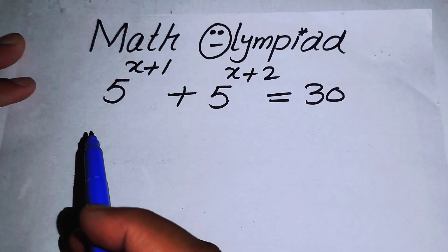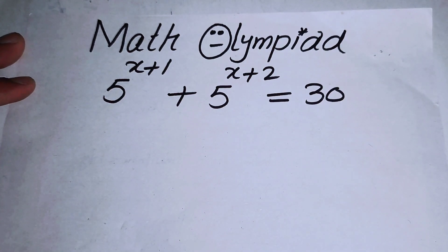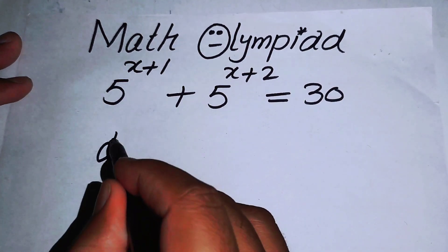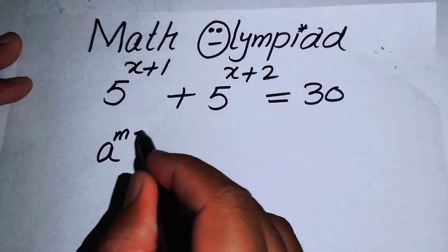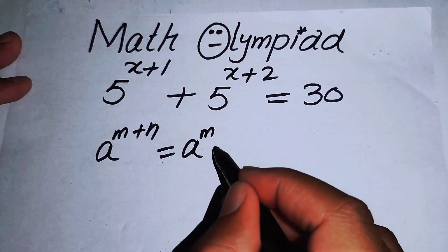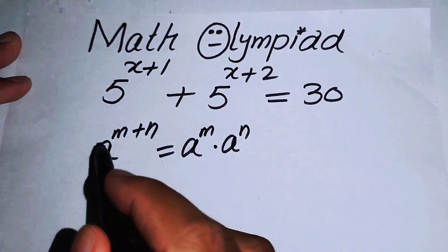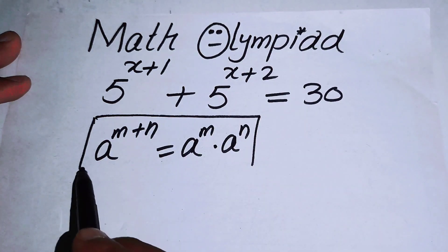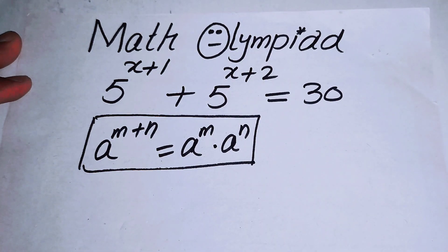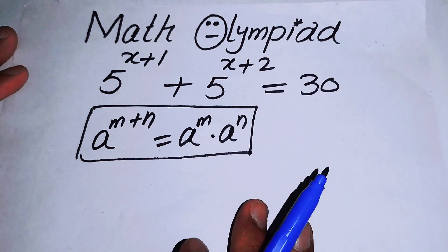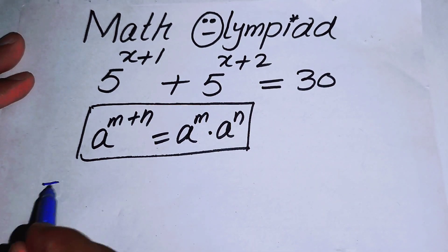The very first thing we are going to do is apply the famous exponential law. This law states that a to the power of m+n equals a to the power of m times a to the power of n. We will apply this exponential law so that the left hand side will be rewritten.